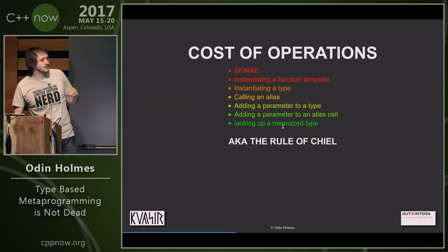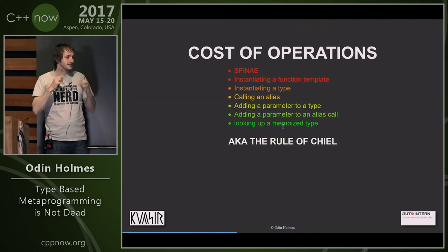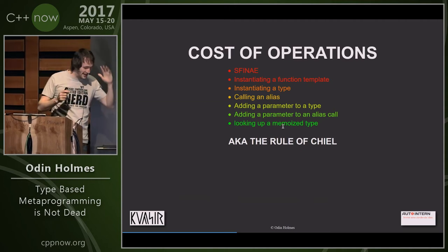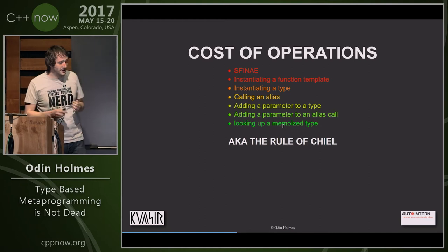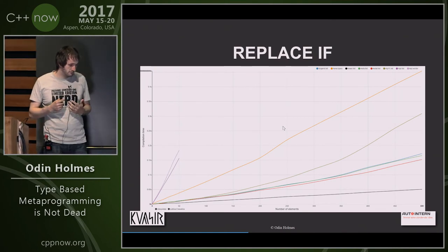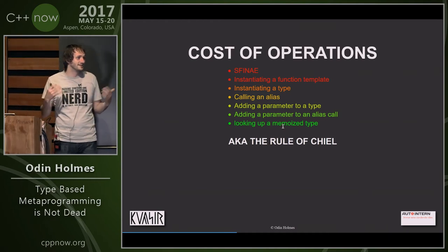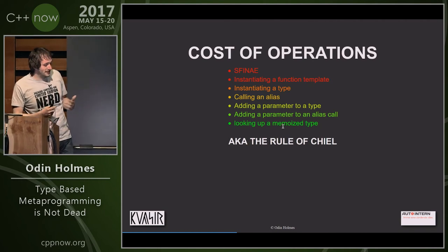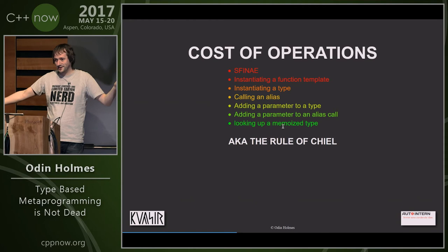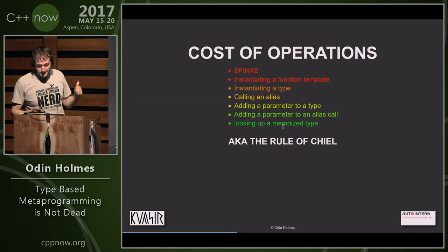Instantiating a type is much more expensive — maybe fifty to a hundred time quanta — because a type has a variadic amount of parameters and stuff in it, so it must involve an allocation of some kind. And then instantiating function templates and SFINAE is even more expensive: there may be other overloads, you may need to figure out the overload set. If you're doing SFINAE, you may have to look at your overload set several times — it gets very expensive at that end.